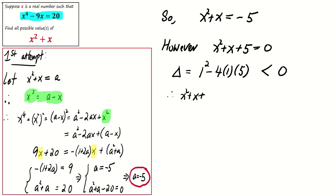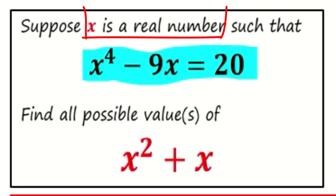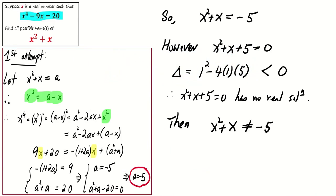That means x^2 + x + 5 = 0 has no real solution, contradicting the condition that x is a real number. So, what does it mean for the value of x^2 + x?